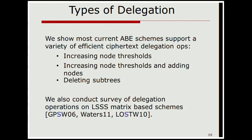We show how to do this type of delegation in essentially all current ABE schemes, and we support a number of efficient ciphertext delegation operations. If you think of policy as specified by a tree of thresholds — an AND-OR tree is a special case — then we can increase a node threshold, turn an OR into an AND, increase the node threshold and add a new child, or delete subtrees to eliminate certain ways of satisfying the policy. These operations can be combined with tree structures to implement time in a way that's only logarithmic in the number of time epochs supported. We also look at the general case of linear secret sharing schemes based on matrices.